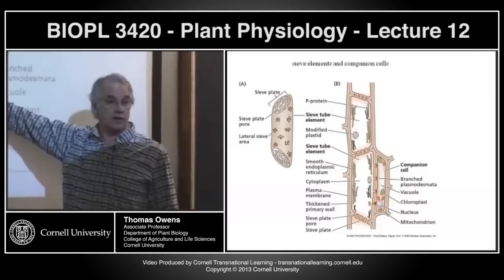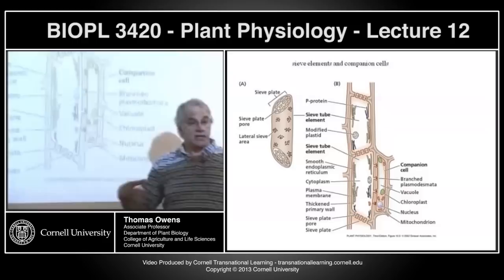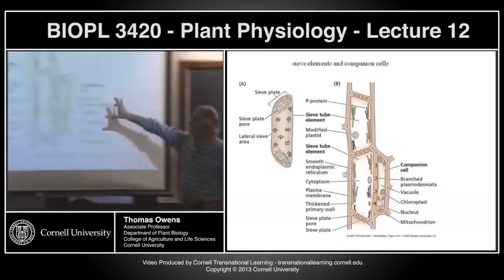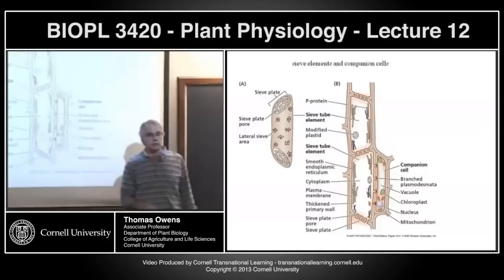In the sieve elements there are no nuclei, very little endoplasmic reticulum, and virtually no mitochondria or chloroplasts — but it does have a plasma membrane and some metabolic functions. The companion cell that goes along with every sieve element is basically the living part of the phloem. All the metabolic control required for what's going on in the sieve element is accomplished by the companion cell.